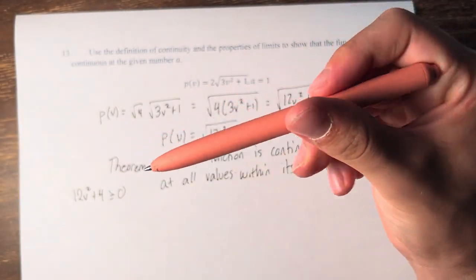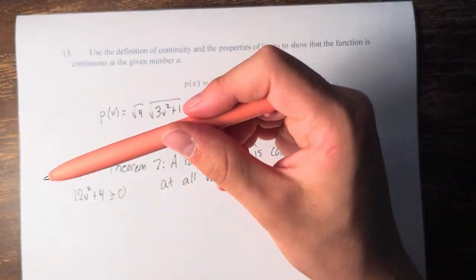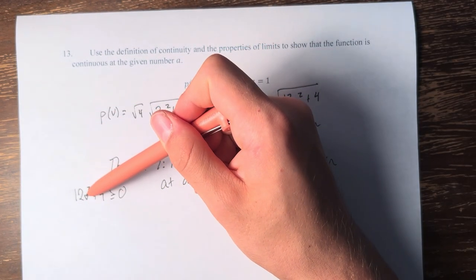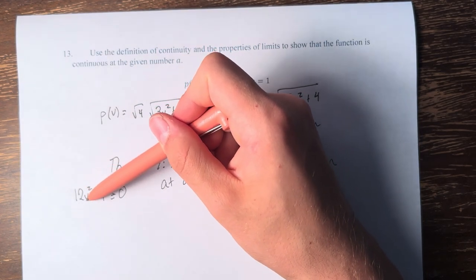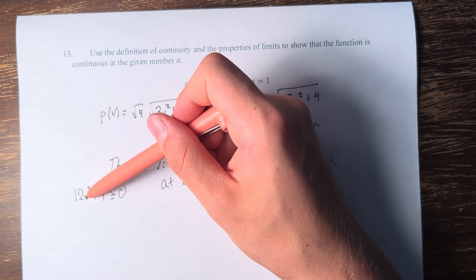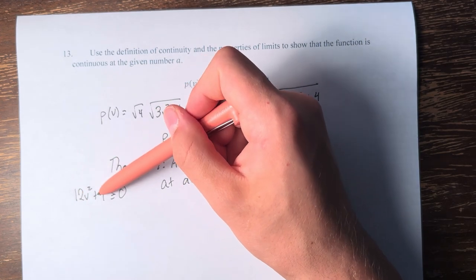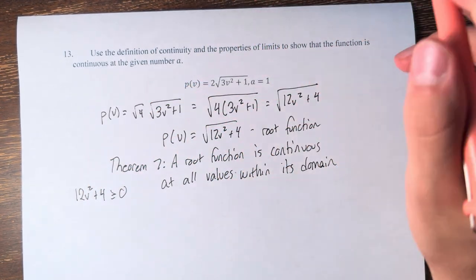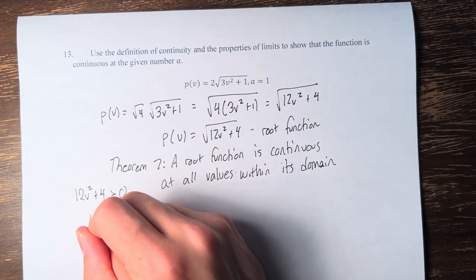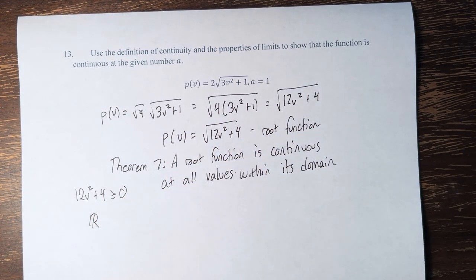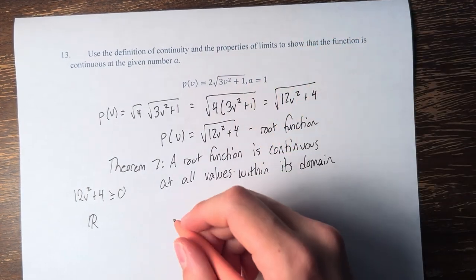Now, we know that any number squared is going to be positive. A positive number times 12 is still positive, and any positive number plus 4 is still positive. Therefore, the domain of this function is all real numbers, and therefore, no matter what a we put in, p of v is continuous.